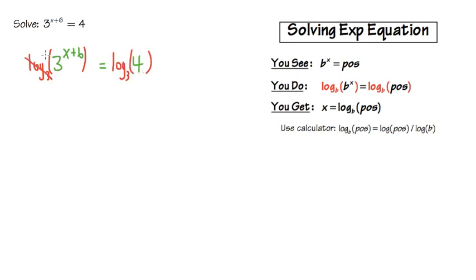This way, the log base 3 and the 3 will cancel. Then we can just get x plus 6 on the left-hand side. No more logs on the left-hand side. But on the right-hand side, we will have log base 3 of 4.